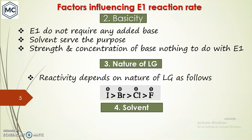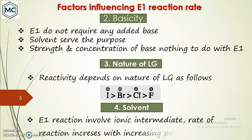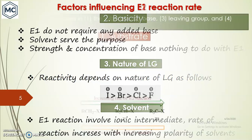The reactivity depends on the nature of the leaving group: iodide is a better leaving group than bromide, which is better than chloride, which is better than fluoride. Regarding solvent, like in SN1 reaction, a polar protic solvent can increase the reaction rate because it stabilizes the intermediate carbocation. Since E1 involves an ionic intermediate, increasing polarity increases the reaction rate.